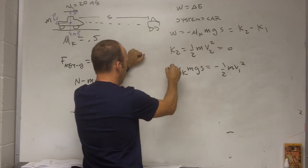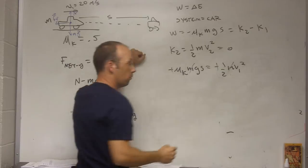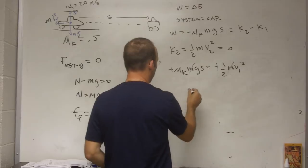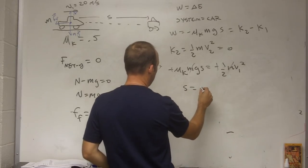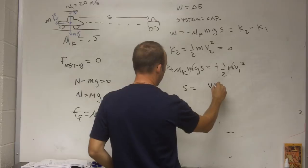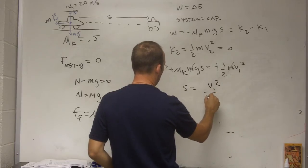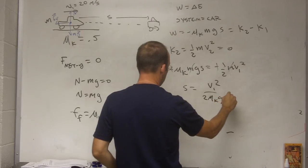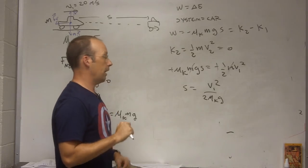Okay. The negatives cancel, the mass cancels too. Okay. And then I can solve for s. s is going to be equal to v1 squared over 2 mu k, g, g. Okay.